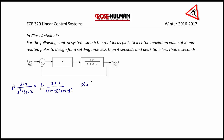Alpha, which equals the number of poles minus the number of zeros, is equal to 1. So theta is equal to (2k + 1) times 180 degrees over 1, or theta is equal to 180 degrees.